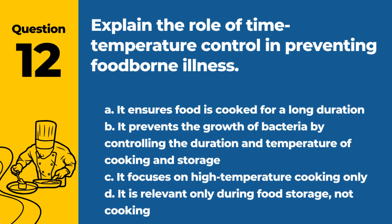Question 12. Explain the role of time-temperature control in preventing foodborne illness. A. It ensures food is cooked for a long duration. B. It prevents the growth of bacteria by controlling the duration and temperature of cooking and storage. C. It focuses on high-temperature cooking only. D. It is relevant only during food storage, not cooking. Answer: B. It prevents the growth of bacteria by controlling the duration and temperature of cooking and storage. Time-temperature control is essential in preventing foodborne illness by controlling the duration and temperature of cooking and storage.